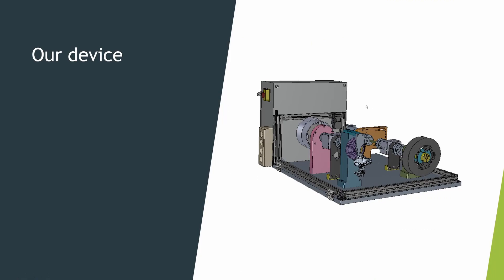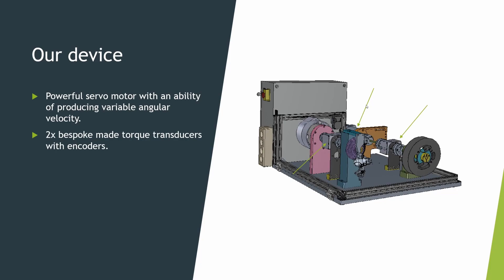Our device was completely bespoke-made for this purpose only — it's not something you can buy in a shop. The main element propelling the entire movement is a very powerful servo motor with the ability to produce variable angular velocity, which is very important when you want to mimic real-world pedaling conditions rather than just constant velocity of the pedal cycle. Also critical are two bespoke torque transducers, specifically calibrated and modified for this application only — not something you can just interpret from an internet datasheet. They were modified to suit exactly this application with a different measurement range than normally reported under the same serial number.